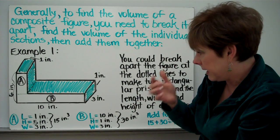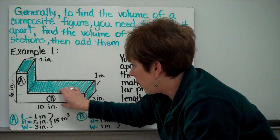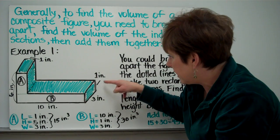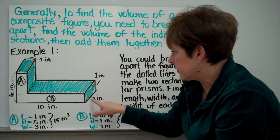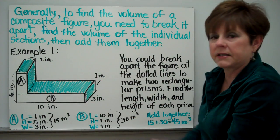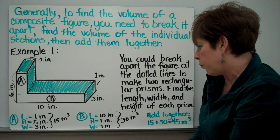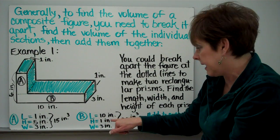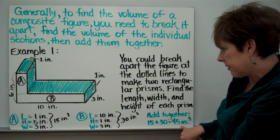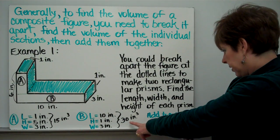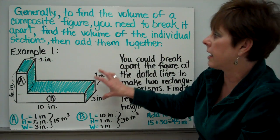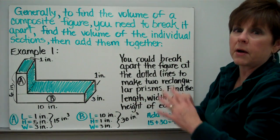So the width is three inches. I figure out the volume: one times five is five, five times three is 15 cubic inches. Now let's look at section B. We know the length at the bottom is 10 inches. The height is one inch — it tells us that. The width is three inches — it tells us that. We're just looking at this bottom rectangular prism. So the length is 10, the height is one, the width is three: 10 times one is 10, 10 times three is 30 cubic inches. Now we add both of them together: 15 plus 30 is 45 cubic inches. That is way easier than trying to determine the volume of the whole thing without breaking it down. You really need to break it down in a logical manner.